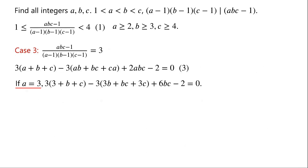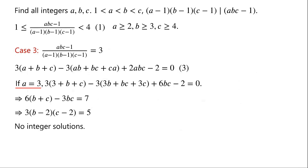If a = 3, then equation 3 becomes 3(3 + b + c) - 3(3b + bc + 3c) + 6bc - 2 = 0. Simplifying: 6(b + c) - 3bc = 7. Rearranging: 3(b - 2)(c - 2) = 5. The left side is divisible by 3 while the right side is not, so Case 3 has no solutions when a = 3. As shown above, a cannot be greater than 3. So there are only two sets of solutions.